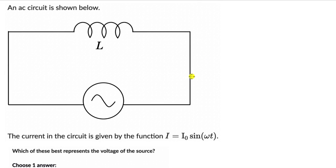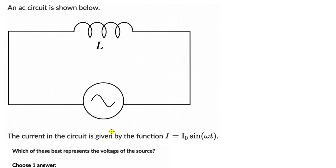Let's solve a couple of questions on AC circuits involving only a single component — either an inductor, a capacitor, or a resistor. In this question, we have an AC circuit where the current is given by the function I₀sin(ωt), and the question is to figure out which of the given options best represents the voltage of this source.